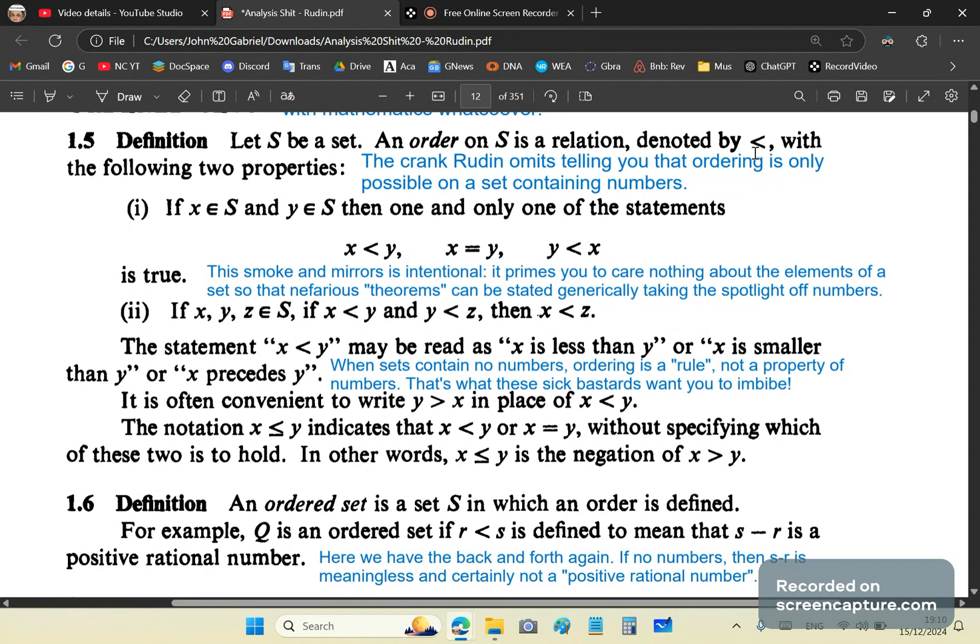So, and it's ordered according to this less than sign because that's the ordering you've made. It's a rule. Basically, there's no other way to interpret this. If you throw numbers out, there's nothing you can say about an ordered set. It doesn't matter what they tell you. What your moronic professors of real analysis tell you is absolute garbage. This typically this is smoke. This is smoke and mirrors and it's intentional. It primes you to care nothing about the elements of a set so that the nefarious theorems can be stated generically, taking the spotlight off numbers.